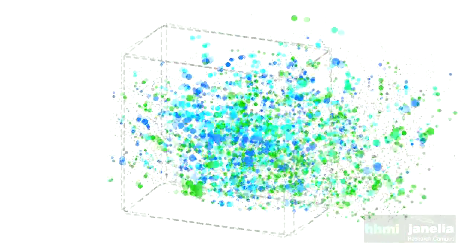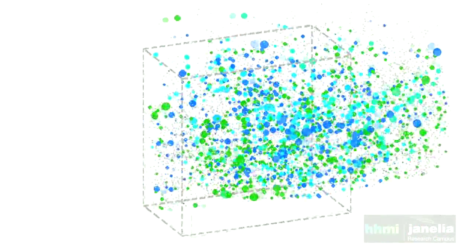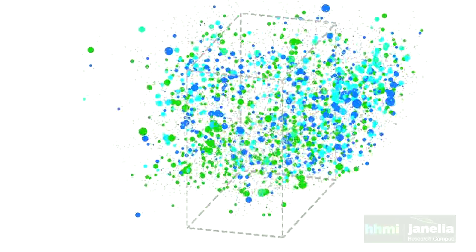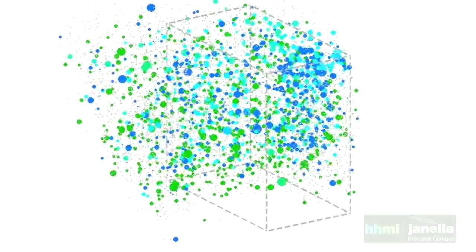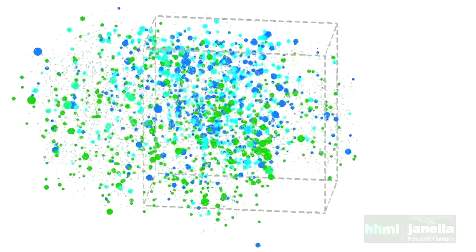The dotted gray line indicates the position of the spared whisker column, that is, the place where input from the one whisker that the mouse has left is arriving at. As you can see, there are far more blue dots inside of this dotted line than outside. This is logical because input from that whisker is of course arriving at that particular column. Green neurons, or whisking neurons, are far more uniformly distributed.